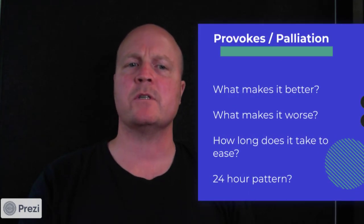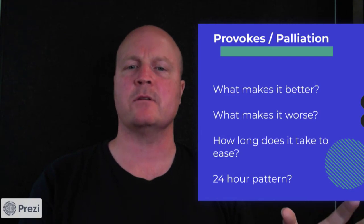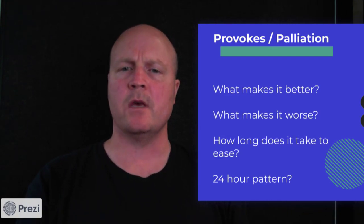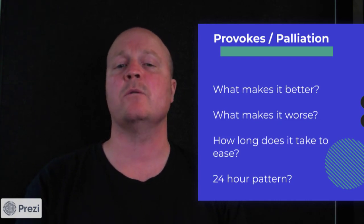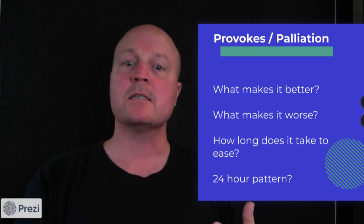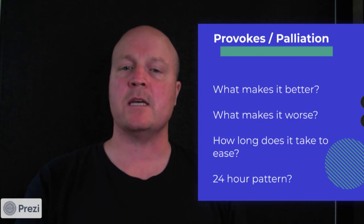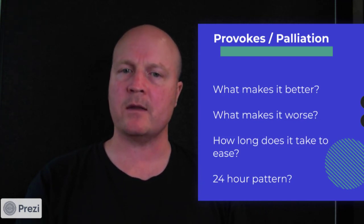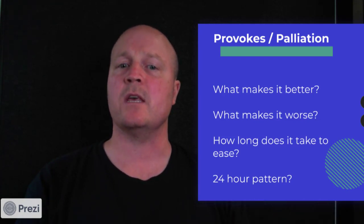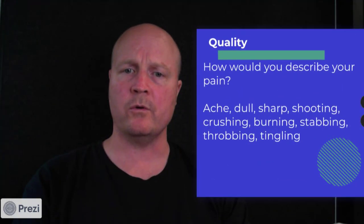Next up is P, which is for provokes and palliation — asking what makes it better and what makes it worse. We can also investigate how long it takes to ease once it has got worse, so we can find its irritability. Does it change throughout the day? Does it have a 24-hour pattern? Can you sleep at night? Is it worse in the mornings or worse in the evenings?